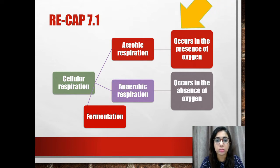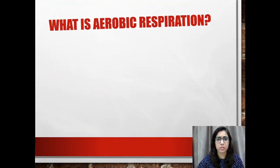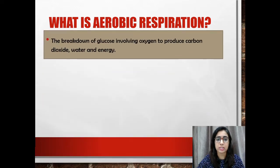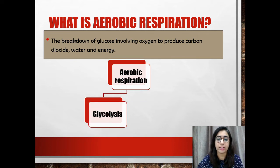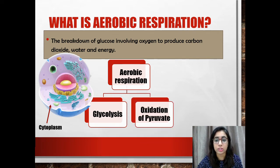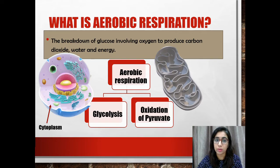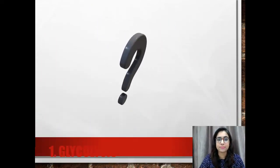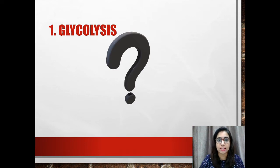In this subtopic we are going to concentrate on aerobic respiration. Aerobic respiration is the breakdown of glucose involving oxygen to produce carbon dioxide, water, and energy. Aerobic respiration is divided into two stages: the first is glycolysis, which occurs in the cytoplasm of a cell, and the second is oxidation of pyruvate, which occurs in the mitochondria. The cell needs to harvest glucose to get energy in the form of ATP.